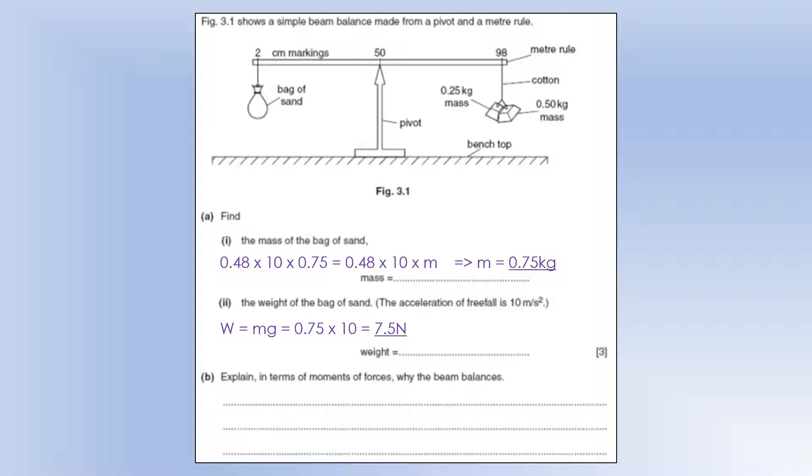Explain in terms of the moments of forces why the beam balances. Well, the anti-clockwise moment of the weight force of the sand, so they can see that's acting to rotate it anti-clockwise, is equal to the clockwise moment of the 0.75 kilogram mass's weight force. It's those two moments that cancel each other out, and that leaves it being in equilibrium.